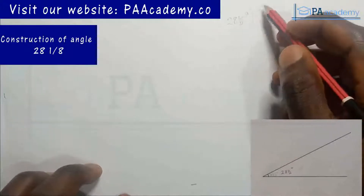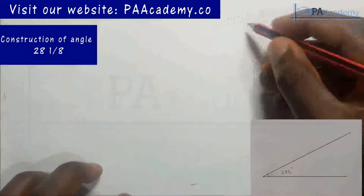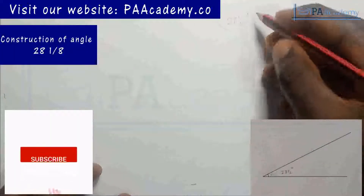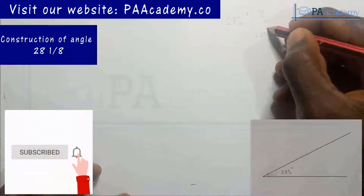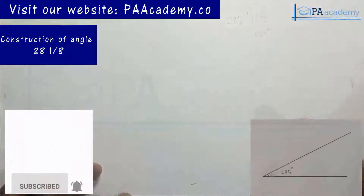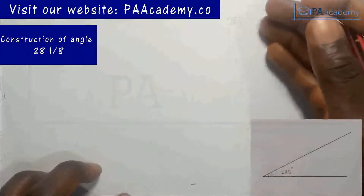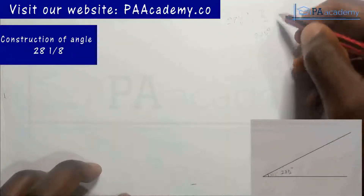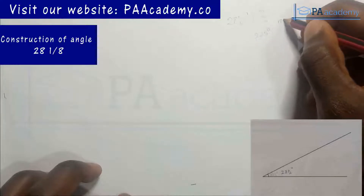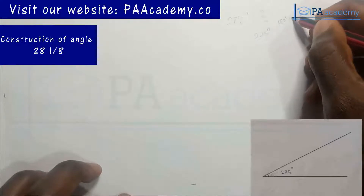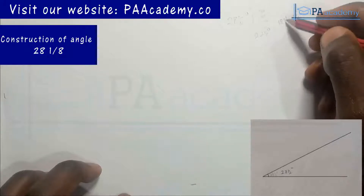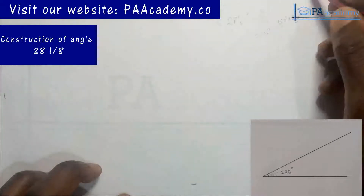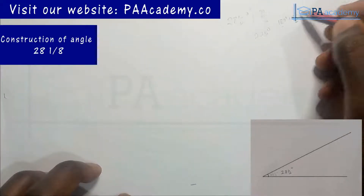To get angle 28 and a half degrees, if we multiply it by three that gives us 225 degrees exactly. These are the calculations you might have to do when asked to construct angles like this. Angle 225 degrees is just like having 180 degrees plus 45 degrees. Angle 180 is an angle on a straight line, and angle 45 is a basic angle — once you have your 90° and bisect it, you get 45.